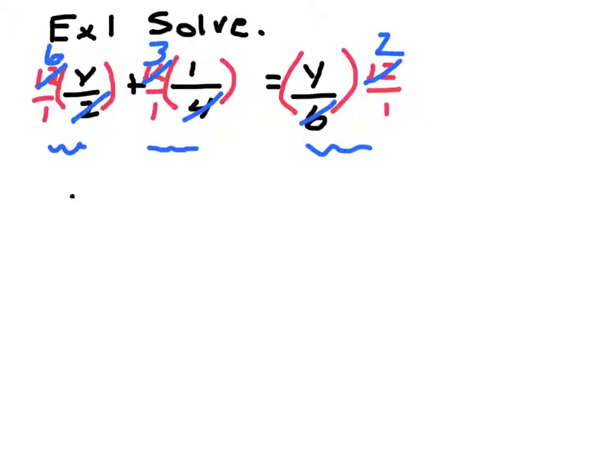Now, what do I have left? I have 6y plus 3 equals 2y. And notice now, it's a lot easier because I don't have fractions I've got to deal with. Now, let's get all the y's on one side and just the numbers on the other. Since all I have on the right side is a y term, let's bring all the y's over to the right side. So, what could I add or subtract to 6y to cancel it?